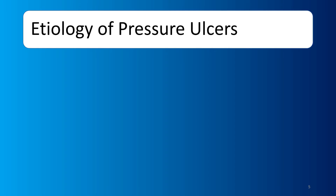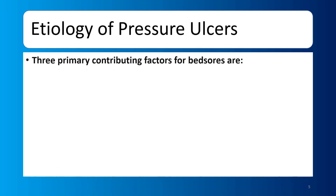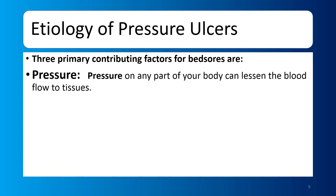Next is the etiology of pressure ulcers — what are the causes? There are 3 primary factors. First is pressure. We call them pressure ulcers because pressure on any part of your body can lessen the blood flow to tissue. When there is reduced blood flow, tissue necrosis will start to develop.